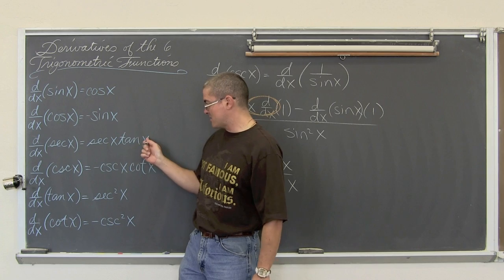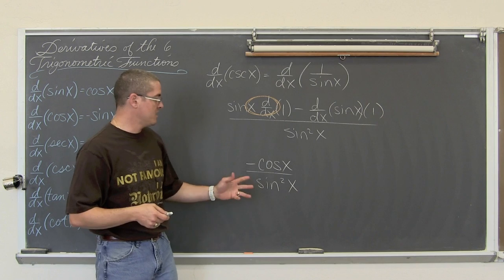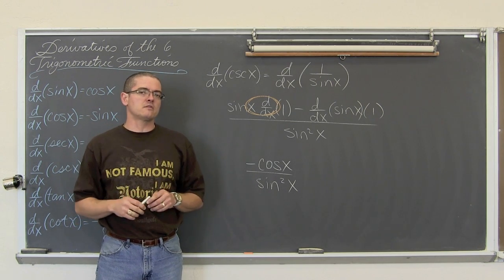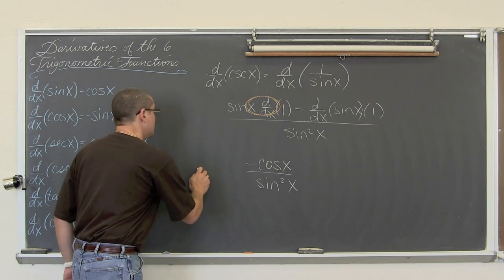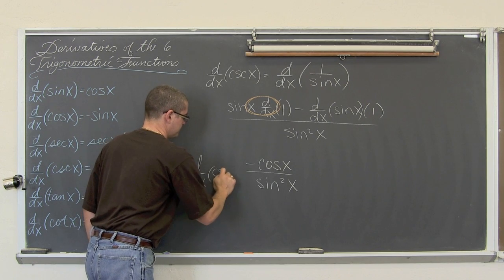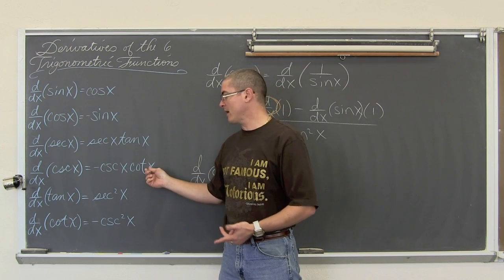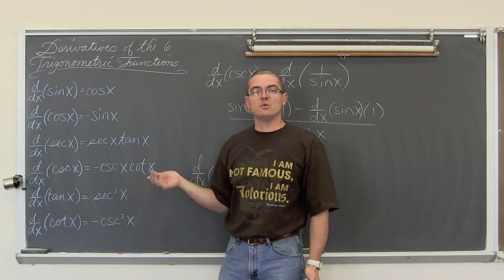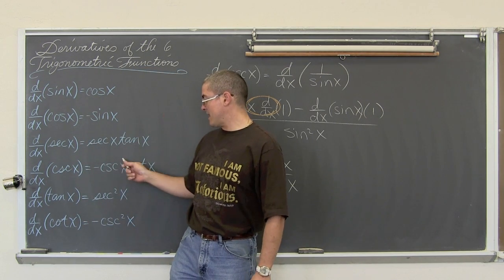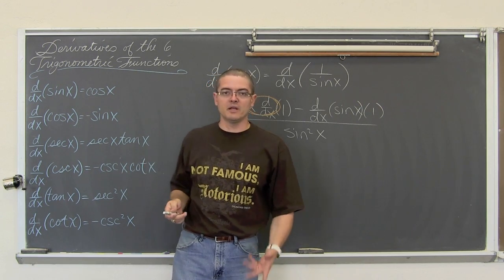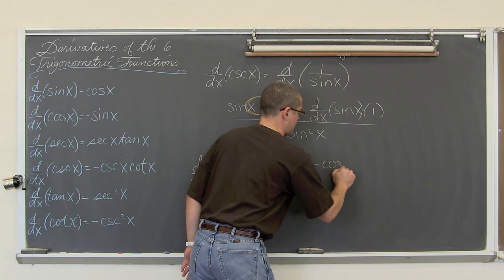Well, that does not look like this — negative cosecant of x times cotangent of x. So that is an issue when you do derivatives, especially with trig functions: you might have a correct answer. This is the derivative of the cosecant function, but when I go in the back of the book and I look at the answer it does not match up. So we are going to manipulate this a little bit. This has a squared trig function on the bottom and these all have exponents of one. So we are going to take this denominator and pull it apart and rewrite this as negative cosine x over the sine of x.